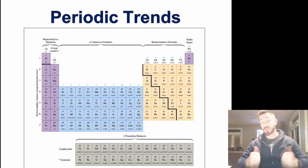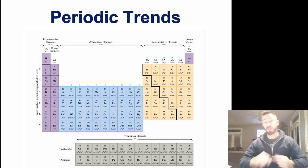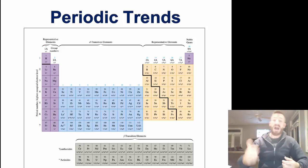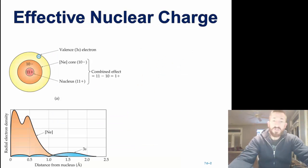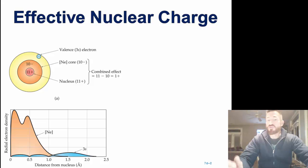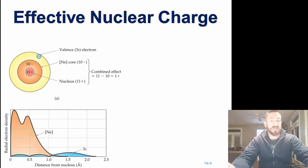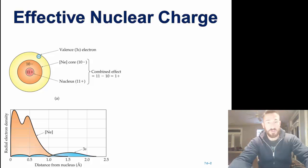Today we're going to talk about periodic trends. These are observed trends for two properties: ionization energy and size of atoms. Before we do that, we want to introduce a new term that's extremely important to understanding this — effective nuclear charge.